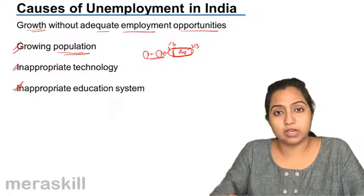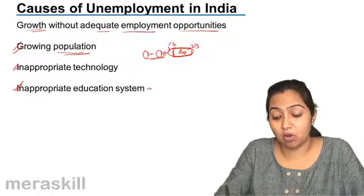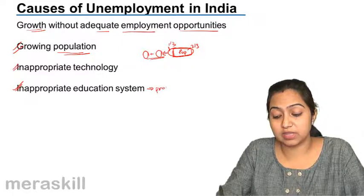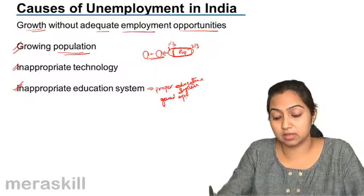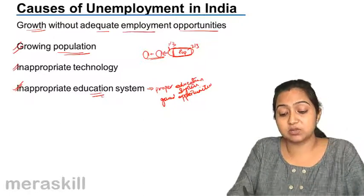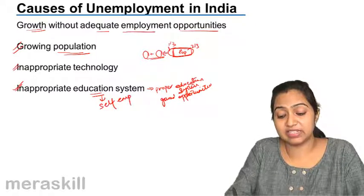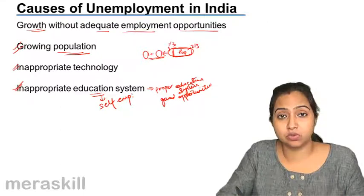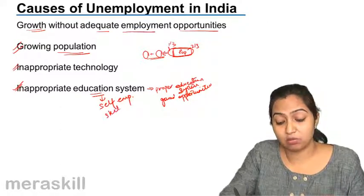The next cause is an inappropriate education system. We aim at providing education to children, but it has not been very fruitful because there is a lack of a proper education system that can provide good opportunities. The education system should be such that people can become confident, get involved in self-employment, and be more skillful.